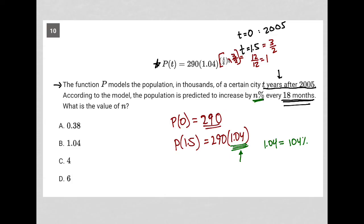104% basically means we have 100% of what we have. So one year and a half after 2005, we have maintained the population that we had. So we have 100% of it, plus we've added an additional 4%. Like that's how we interpret this 1.04. So 4% is the increase. So if we're talking about n%, that means that our n value must equal 4. And therefore, choice C must be correct.